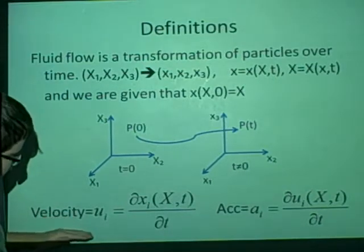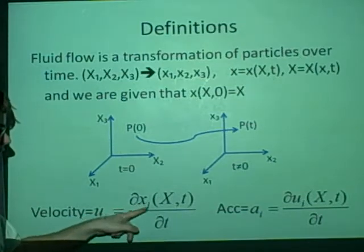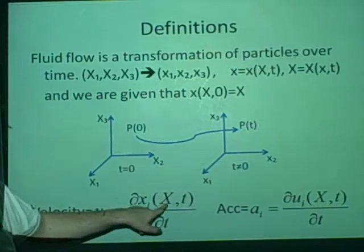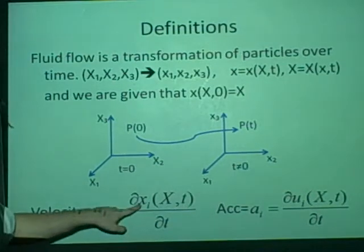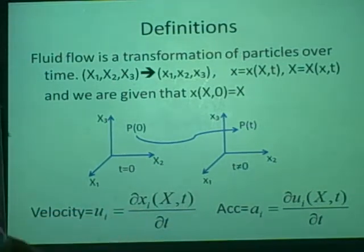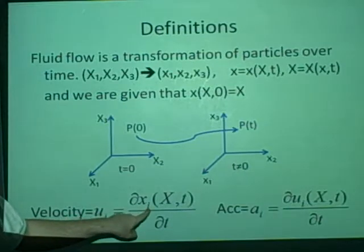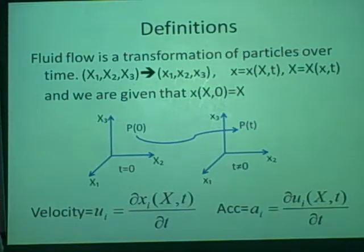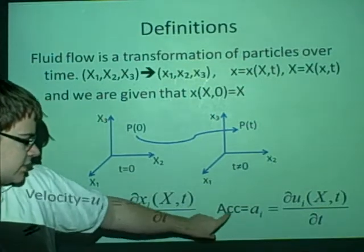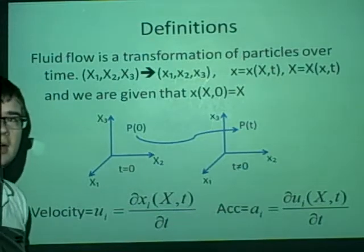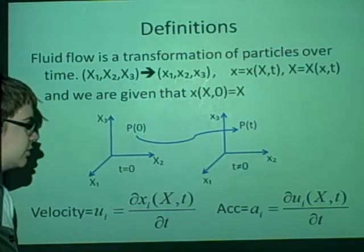Right, so the velocity u is partial x over partial t at X,t, because this is just rx. And the i's here is like the first element of the velocity, and that's the first element of just the initial point. The acceleration here is just the derivative of the velocity, as is the case in most mechanics lectures.